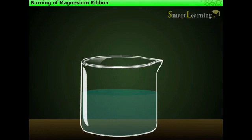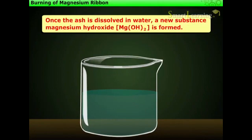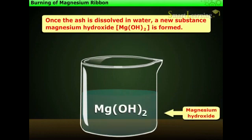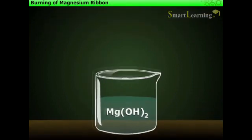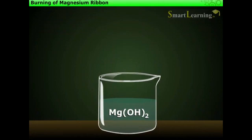Once the ash is dissolved in water, a new substance, magnesium hydroxide is formed. Let us see the equation for this change. Magnesium oxide plus water gives magnesium hydroxide.